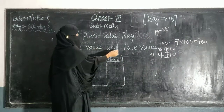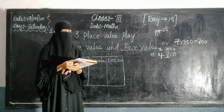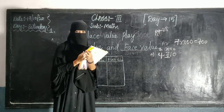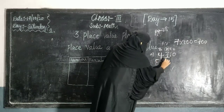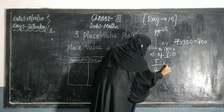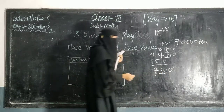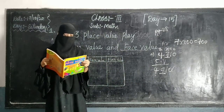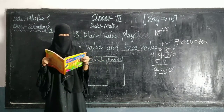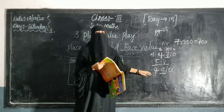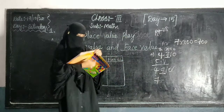Next, here is face value. Face value is the value of the digit itself. For example, the face value of 7 is 7 itself. The face value of a digit is the digit itself.